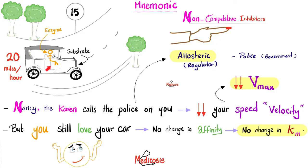For non-competitive inhibition, imagine you're driving your Ford Model T over the speed limit. You are the enzyme, your car is the substrate. Nancy the Karen shows up out of nowhere and starts yelling at you. Your speed — your Vmax — will go down after hearing her. However, you still love your Ford Model T; your affection for your car did not change, so affinity remains constant and there is no change in Km with non-competitive inhibitors.